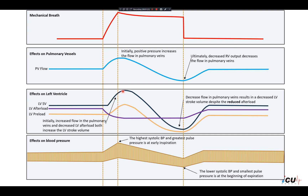As a result of these effects, stroke volume will be higher in early inspiration. However, the decreased preload dominates in late inspiration, and the final effect is a decreased left ventricular stroke volume at the end of inspiration. The fourth graph shows blood pressure: as a result of increased stroke volume in early inspiration, systolic blood pressure is at its highest and pulse pressure is greatest. At the end of inspiration, blood pressure is at its lowest and pulse pressure is smallest.